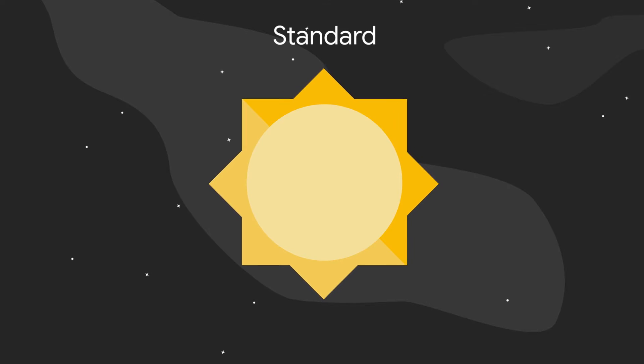Standard is like the sun — they both start with S, and they're both hot. Hot data is data that's accessed frequently. If you have data stored and need to access it whenever you want, Standard is the storage needed.